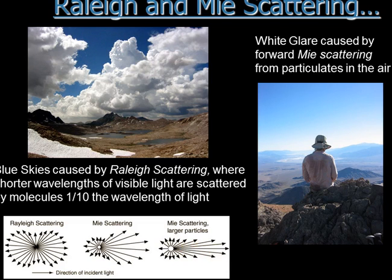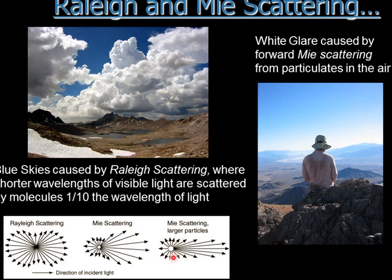Because the light in Mie scattering is white, it's happening to all colors in the spectrum. In the light world, if you mix all the colors you get white. So in Rayleigh scattering it's only the blue light that gets scattered everywhere, whereas in Mie scattering all colors of the spectrum are scattered — but only in a forward direction, not everywhere.